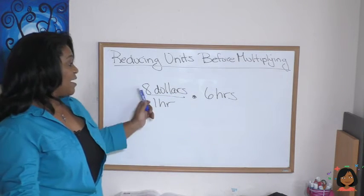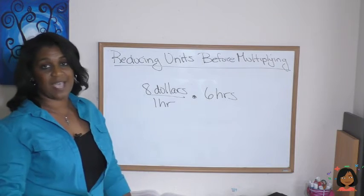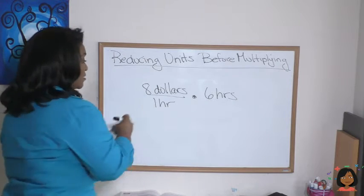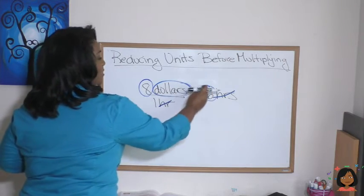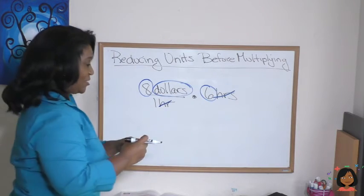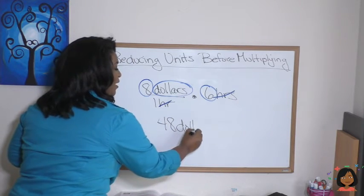What about this? I make $8 in 1 hour. How much could I make in 6 hours? Let's cross out the units. Hours to hours, and I'm left with $8 and a 6. 8 times 6 is $48 is what I have.